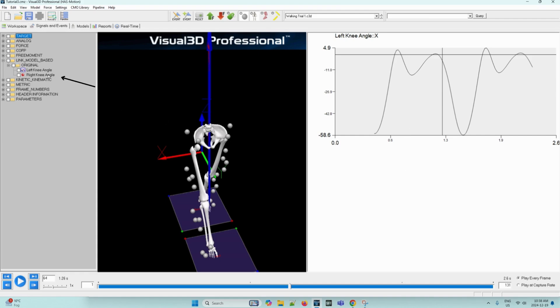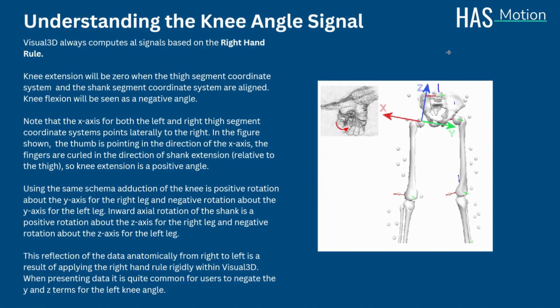This will add the X component of the left knee angle signal to this area in the signals and events processing tab. Then we can go ahead and do the same for the right knee angle. So we right click. Select Graph X. And New Graph. In this segment coordinate system, the Z direction is upwards and the Y represents the anterior. Rotation about the X axis represents flexion and extension. Visual 3D always computes all signals based on the right hand rule.